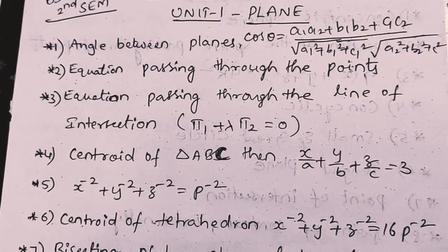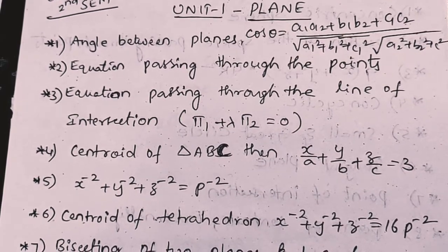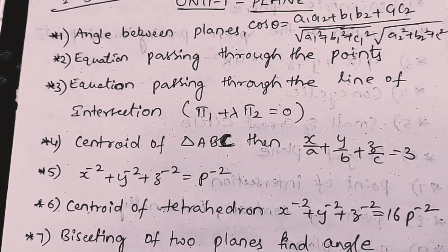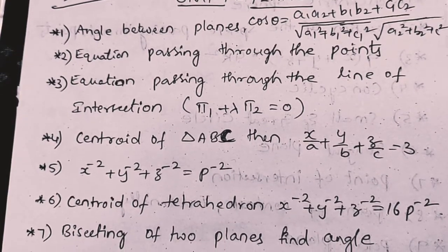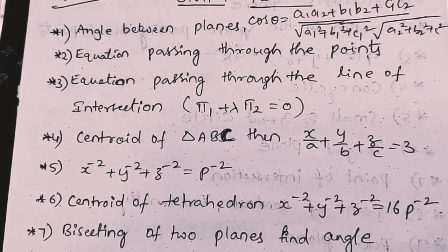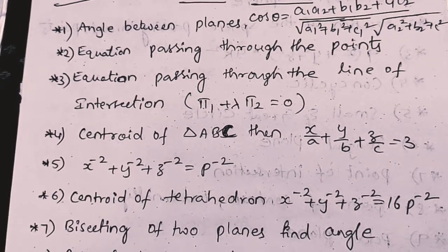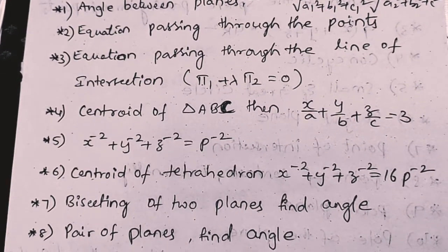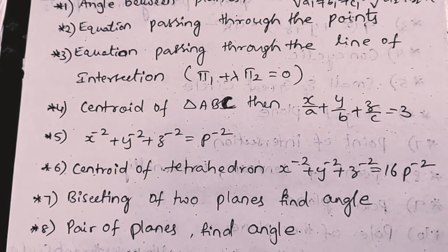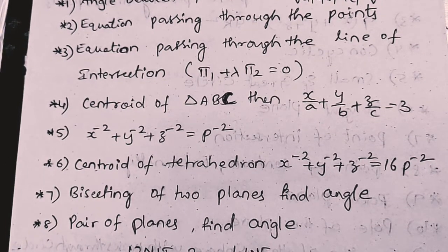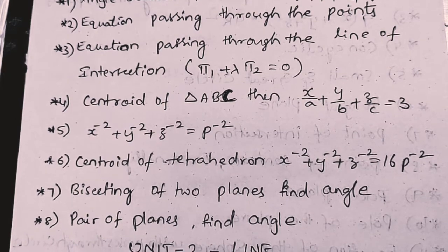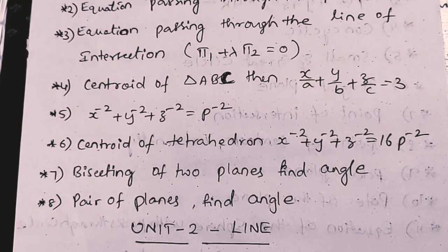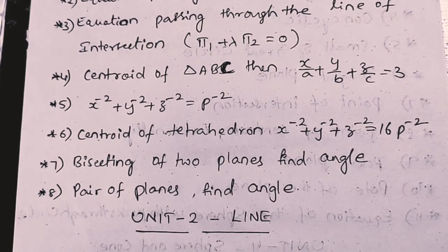Angle between two planes, equation passing through the points, equation passing through the line of intersection. Centroid of triangle ABC, then X by A plus Y by B plus Z by C equals 3. X power minus 2 plus Y power minus 2 plus Z power minus 2 equals P power minus 2. Centroid of tetrahedron X power minus 2 plus Y power minus 2 plus Z power minus 2 equals 16 P power minus 2. Bisecting of two planes, find angles, pair of planes, find angles.